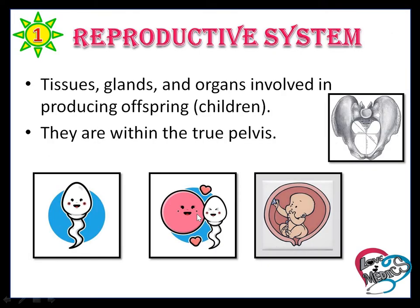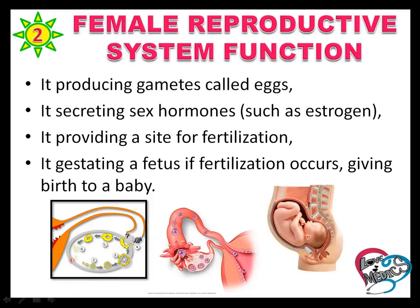The reproductive system refers to the tissues, glands, and organs involved in the production of offspring. They are within the true pelvis. Female reproductive functions include producing the gametes, that is eggs, secreting hormones such as estrogen, providing the site of fertilization, gestating a fetus if fertilization occurs, and giving birth to a baby.